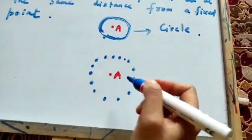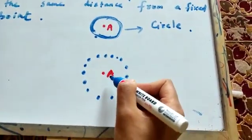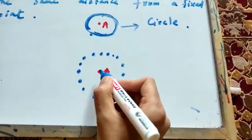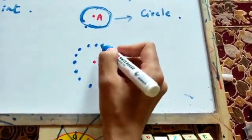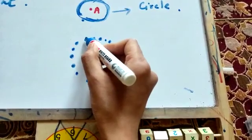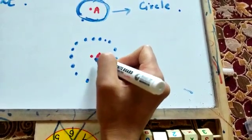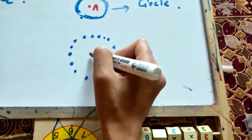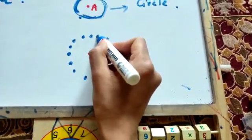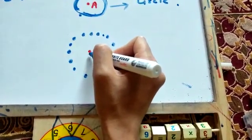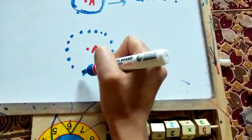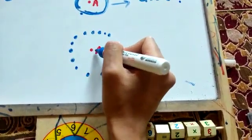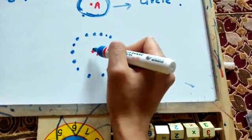We were discussing about circles. I have taken a point A in the middle of the board. I have taken several points and the distance from point A to each of them is 2 cm. Similarly, I have taken a lot of points and all their distances from point A is 2 cm.